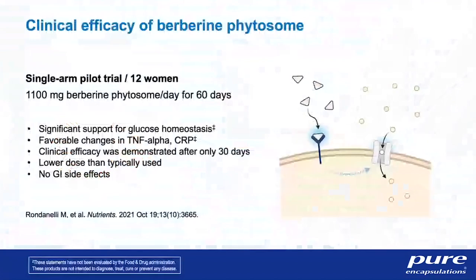A single-arm pilot trial of 12 women received 1,100 milligrams of berberine phytosome per day for two months. They found significant support for healthy glucose responses and glucose homeostasis — corroborating all other berberine evidence but at a lower dose. There were also favorable changes in immune mediators TNF-alpha and CRP, with clinical efficacy demonstrated after only 30 days. There were no GI side effects, and berberine phytosome was extremely well tolerated.